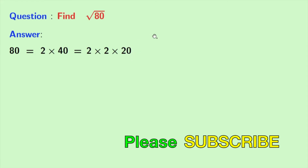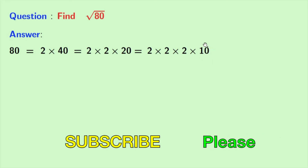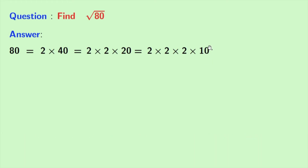Now again, 20 is an even number so it will also be divisible by 2, and we have 2 times 2 times 2 times 10. And 10 is equal to 2 times 5, so we have now 80 is equal to 2 times 2 times 2 times 2 times 5.